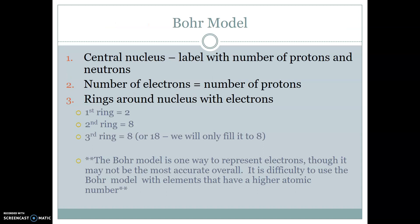Okay, so for the Bohr model. In the Bohr model, we have a central nucleus. We label it with the number of protons and neutrons. We have the number of electrons equal to the number of protons for any neutral atom. The rings around the nucleus we will fill with electrons.